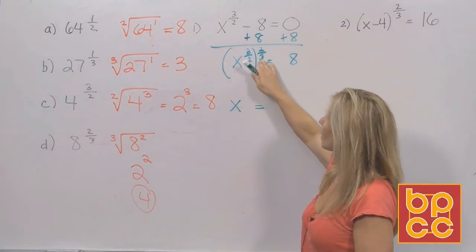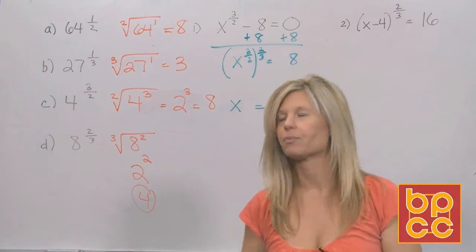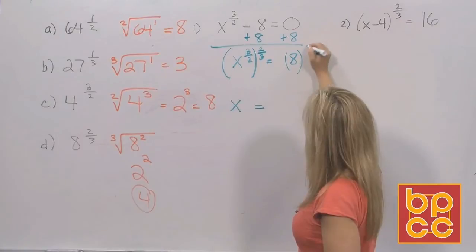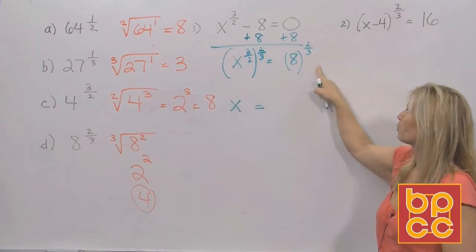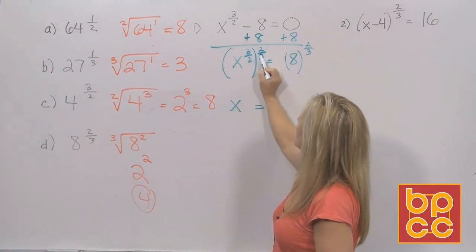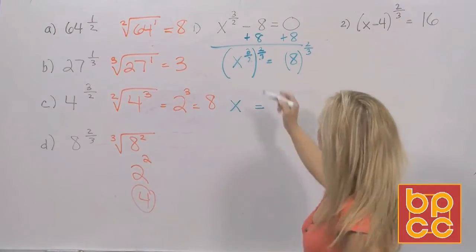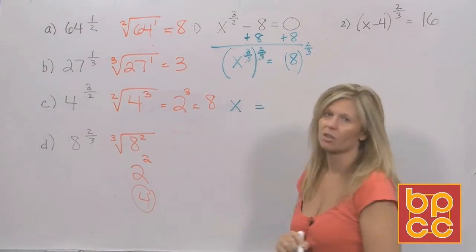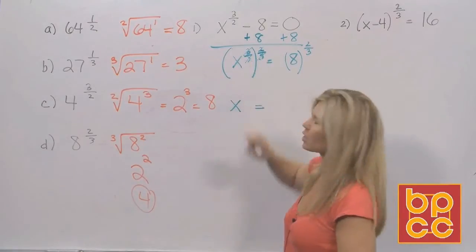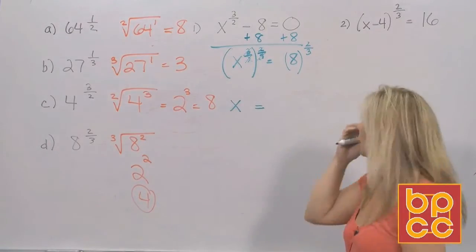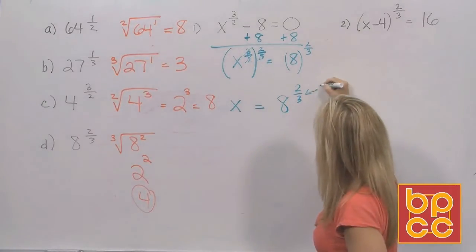After isolating the rational exponent, raise it to its reciprocal — called the multiplicative inverse. Put the two-thirds exponent on both sides. On the left, two exponents side by side with a parenthesis are connected by multiplication, which is the power rule. Three-halves times two-thirds cancels to make x to the first. On the right side you have 8 to the two-thirds, which you can't leave since it's a fractional exponent.